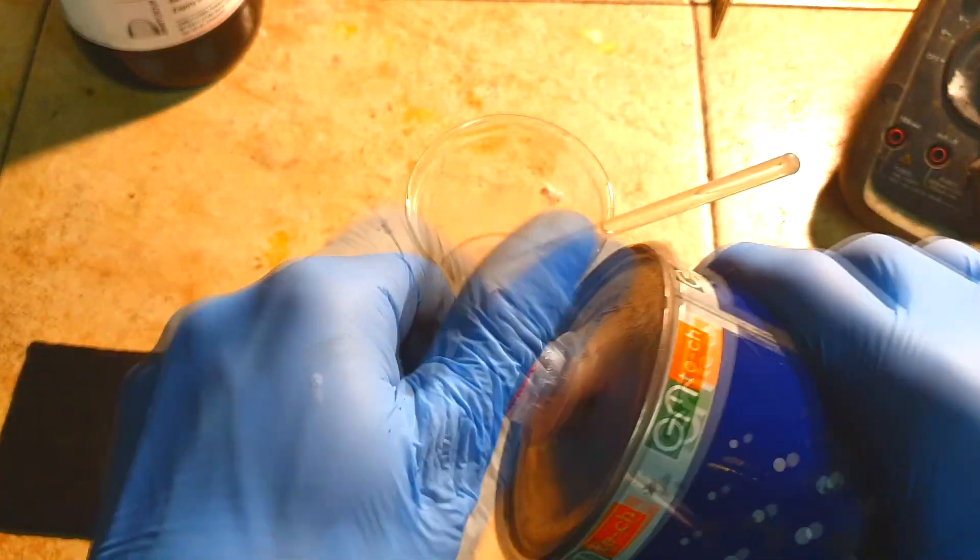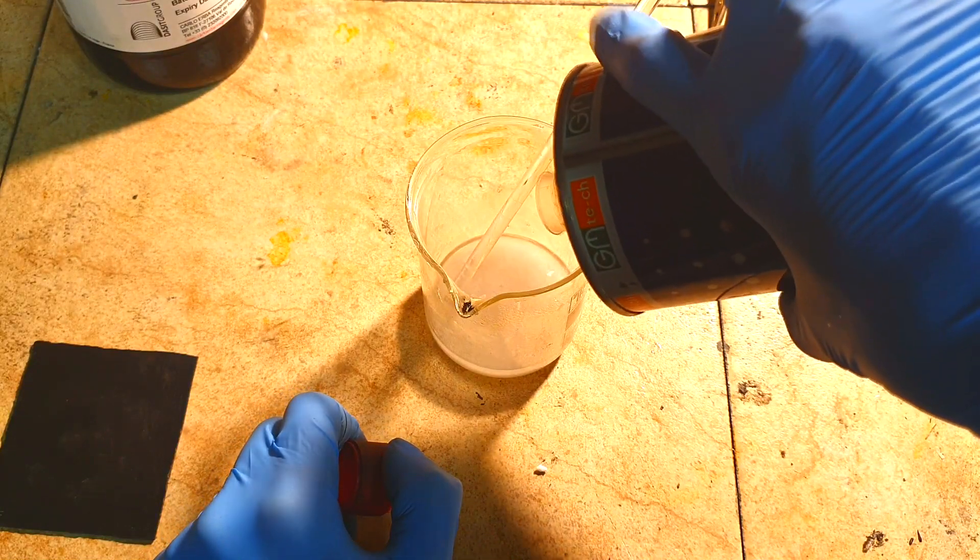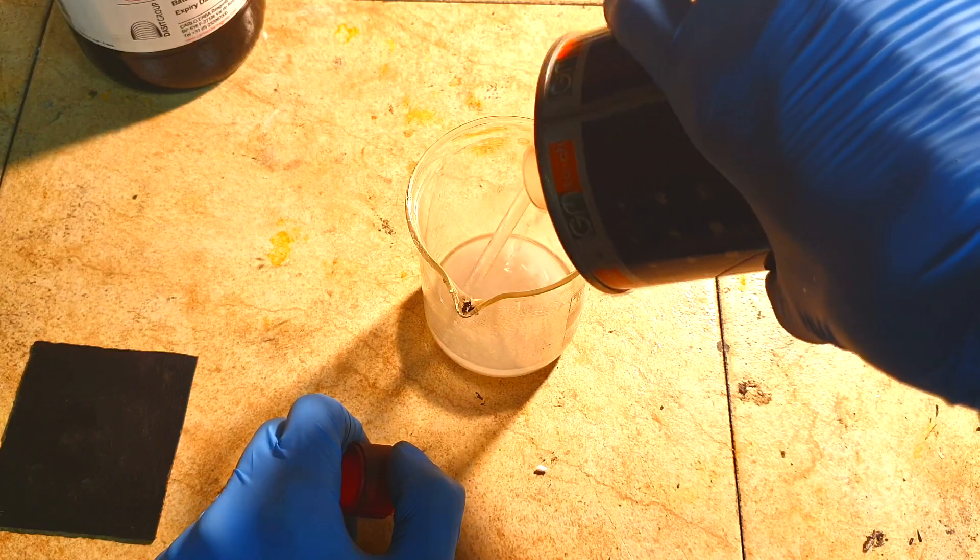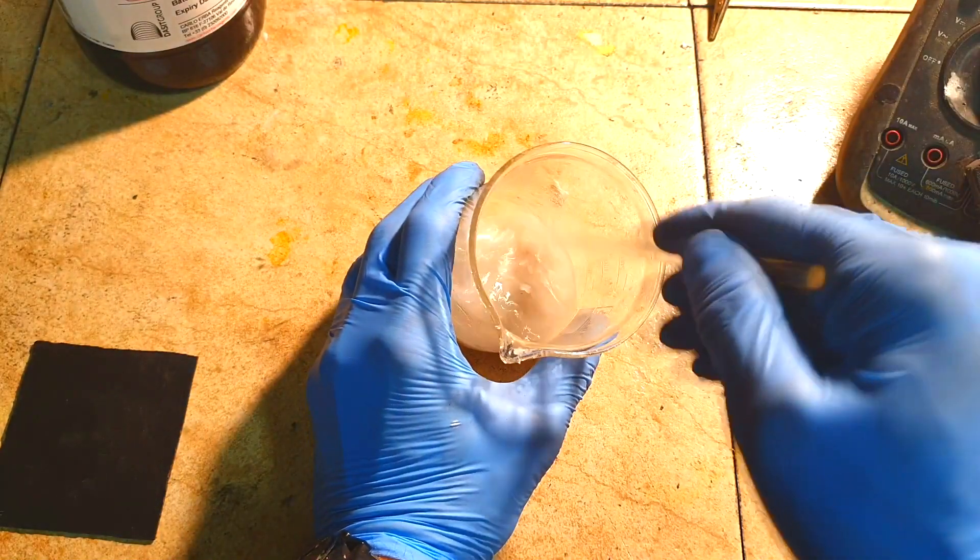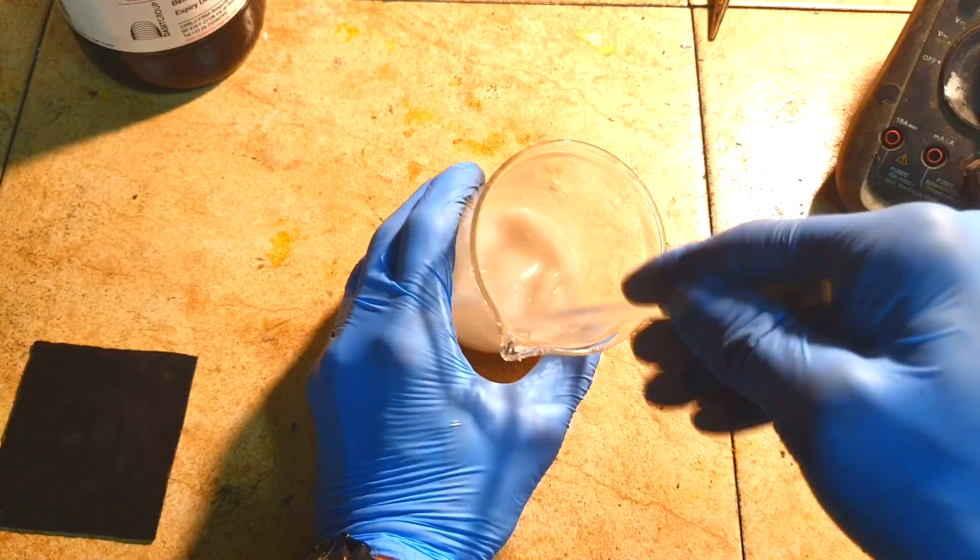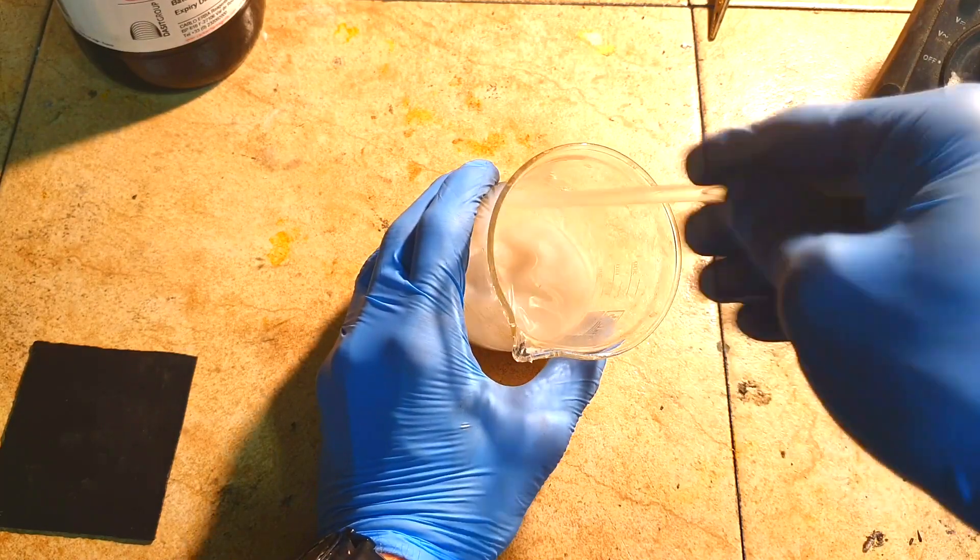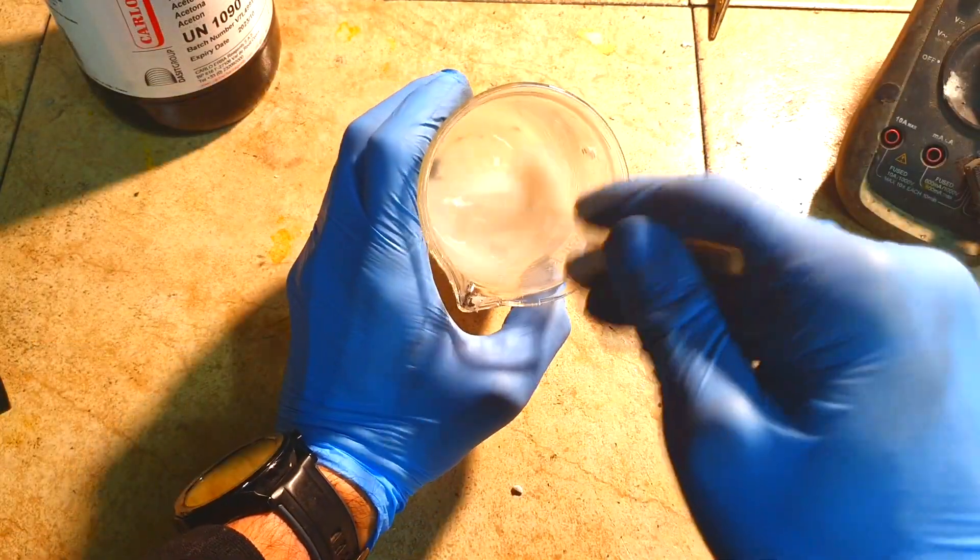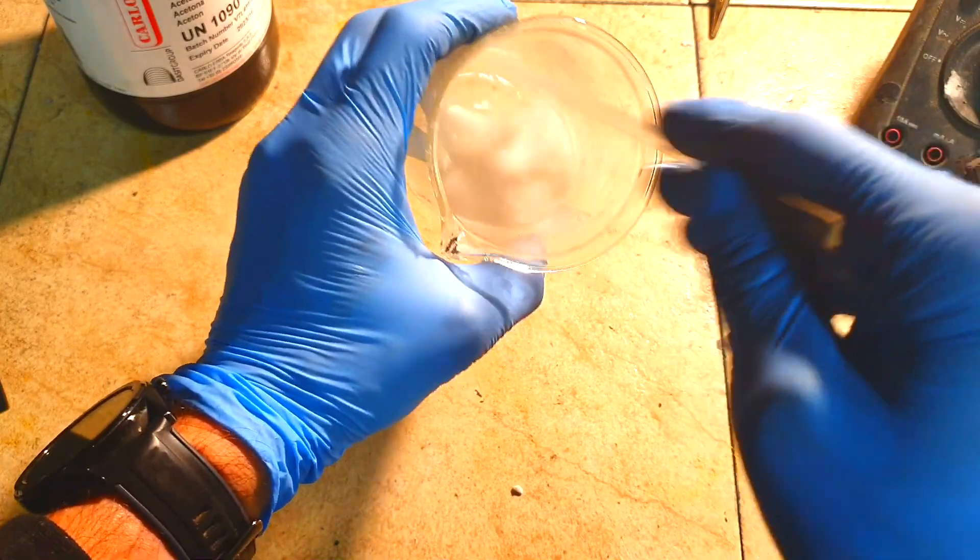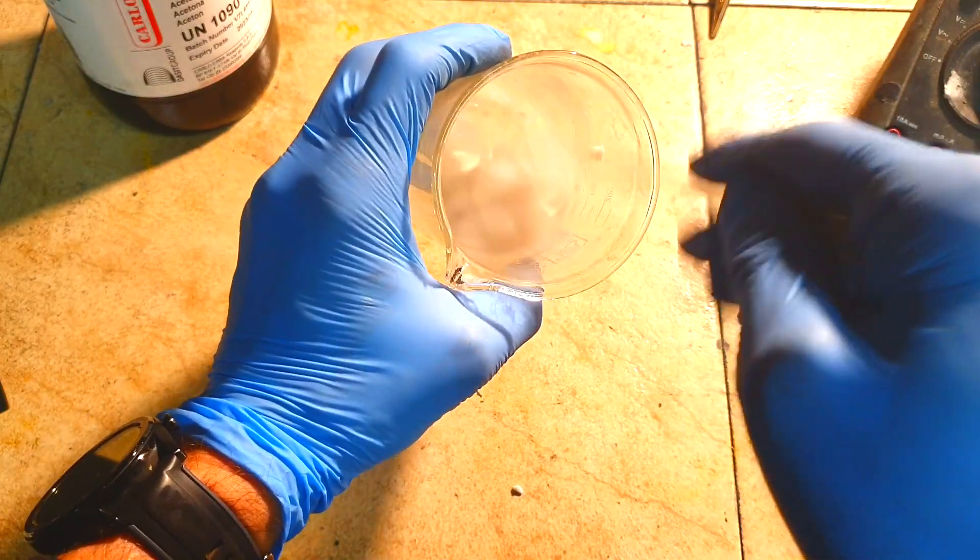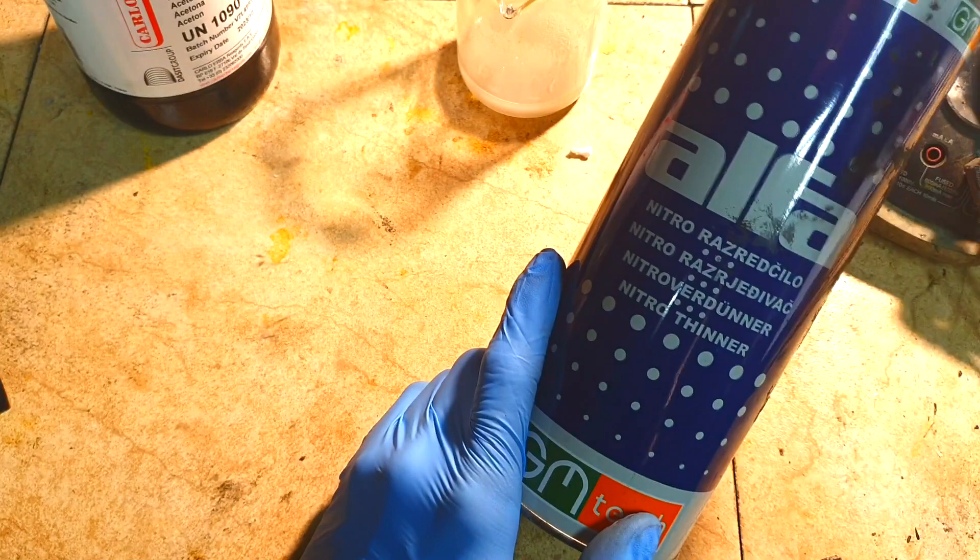Don't add too much of this nitro thinner because then you will not get really good plastic. The plastic will be really fragile. Now you see that all this styrofoam slurry is dissolved only with adding a little bit of nitro thinner. Nitro thinner is really good because you can find it in almost any technical store.